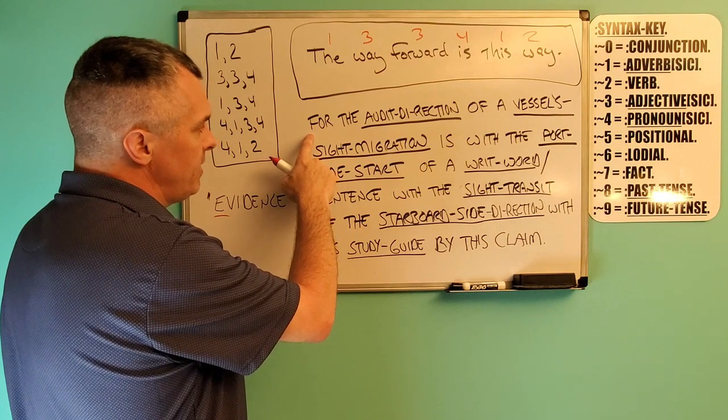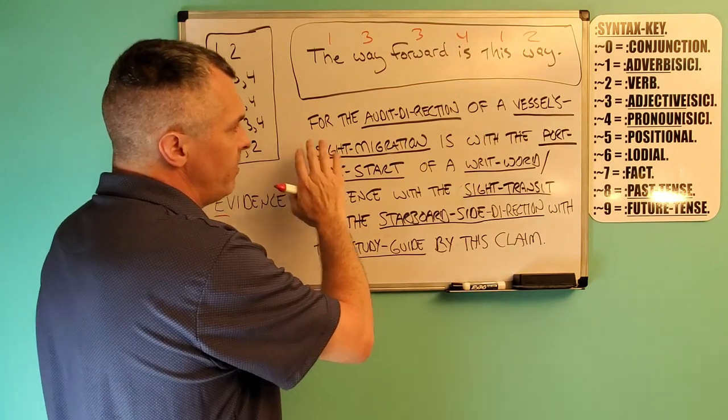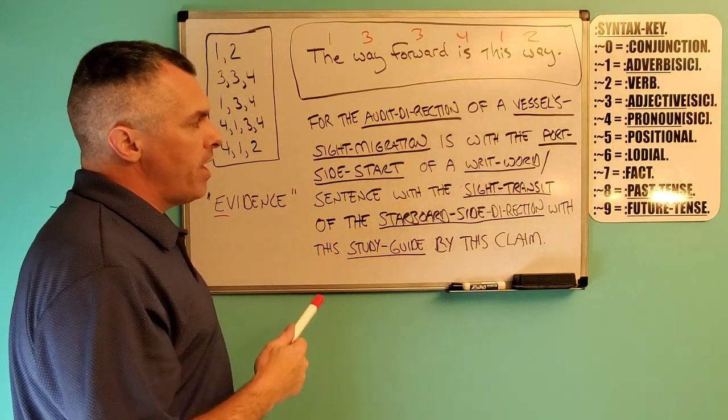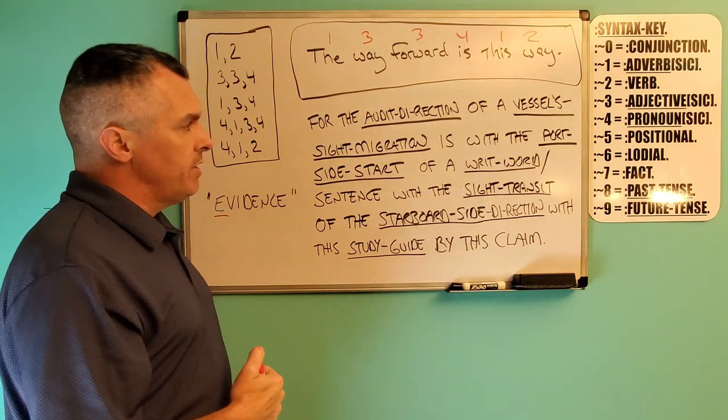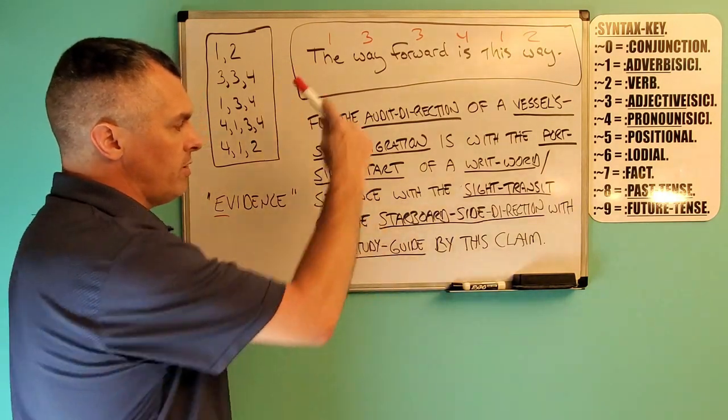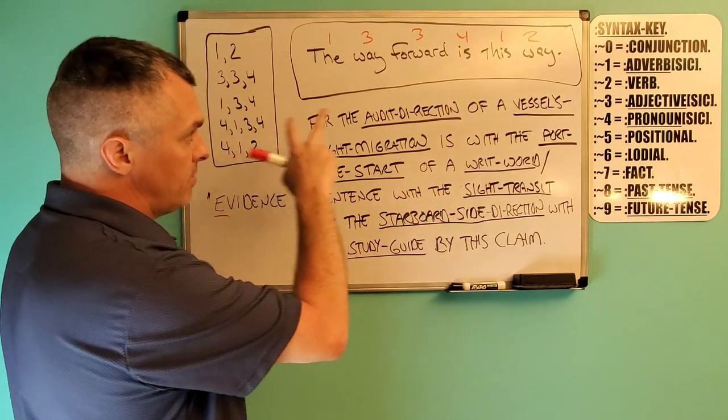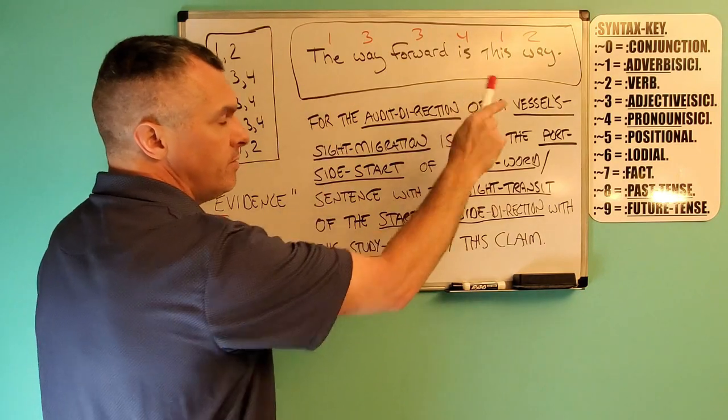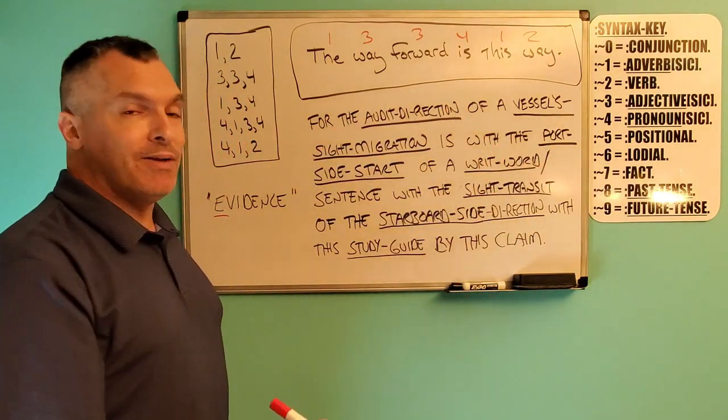Start at the beginning, which would be here. Left to right. So how would we read this? Backwards for the audit direction of a vessel's site migration is with the port side start of a writ word sentence with the site transit of the starboard side direction with this study guide by this claim.